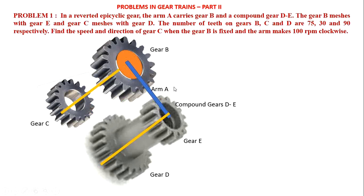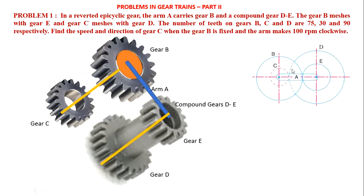Now we will have a schematic sketch for this. Gear B meshing with compound gear DE, and arm A is connected with this. This is arm A. And gear C is meshing with gear D — gear C is on the back side of this gear. This is the configuration of the gear.